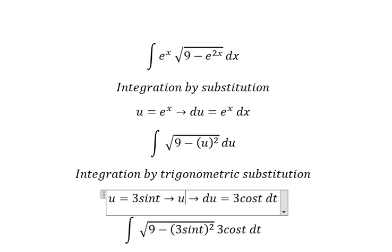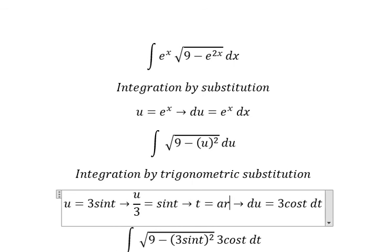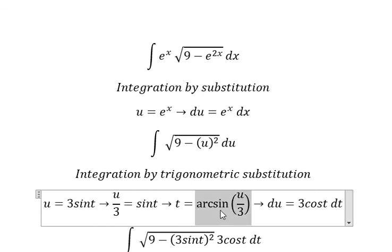So we divide both sides by number 3, and we get t equal to arcsine of u over 3. We put this one to replace for t.